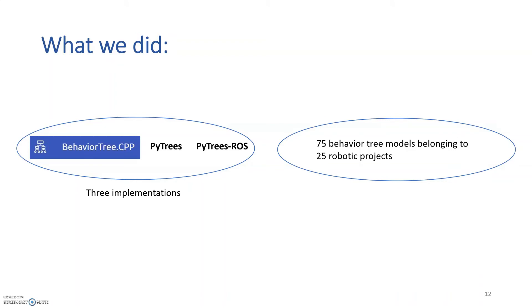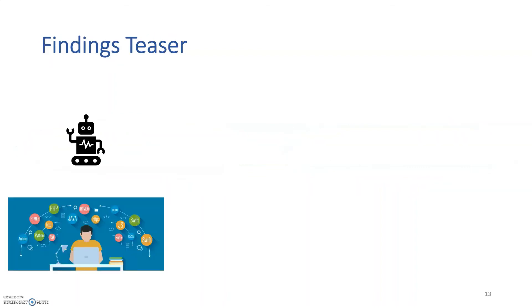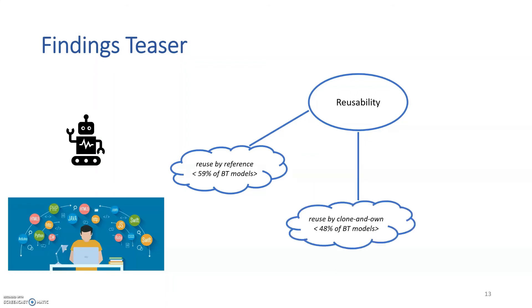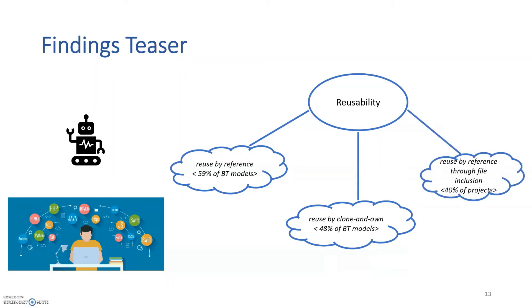To understand how these languages are used in practice, we analyzed 75 behavior tree models belonging to 25 robotic projects. By looking at these languages designed outside the language community by roboticists, we noticed that many modeling and language engineering methods were relevant in practice, like reusability. While analyzing the 75 behavior tree models, we found they tend to use three simple reusability patterns: 59% implemented reuse by reference, 48% did reuse by clone-and-own, and 10 out of 25 projects did reuse by reference through file inclusion.